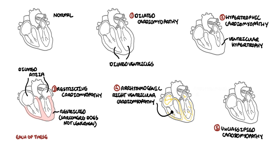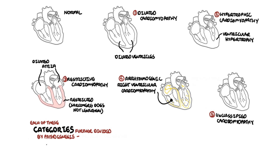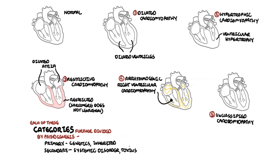Each of these five types of cardiomyopathies can be further divided by pathogenesis. Primary means the cardiomyopathy is primarily confined to the heart — usually genetic or inherited cardiac conditions. Secondary means the cardiomyopathy occurs as part of another systemic disorder, as a result of toxins, inflammation, infection, or other causes.